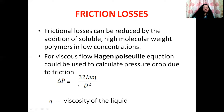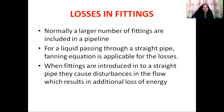The Hagen-Poiseuille equation is: delta P equals 32 L U eta divided by D squared. Here, eta is the viscosity of the liquid. Moving on to the next point: losses in fittings.